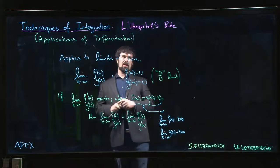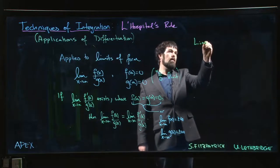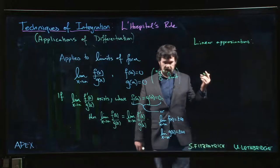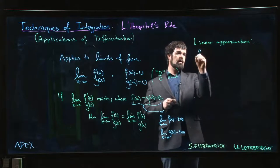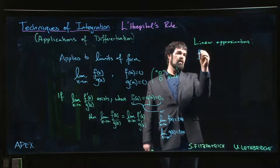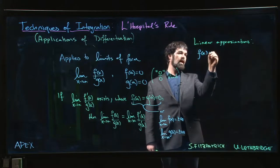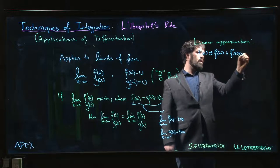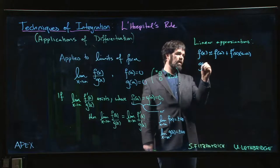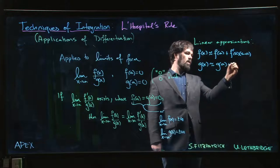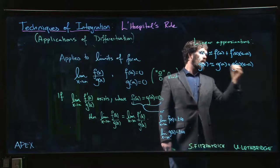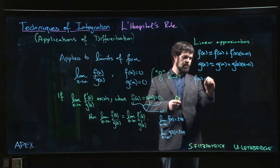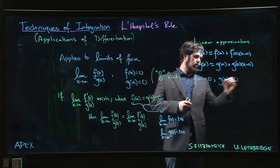One way to think about it is in terms of linear approximations. If we're interested in what's going on near x = a, when x is close to a, f(x) is approximately f(a) + f'(a)·(x − a), and g(x) is approximately g(a) + g'(a)·(x − a). If we assume f(a) = 0 and g(a) = 0, then when we look at f(x) over g(x), those zero terms drop out.